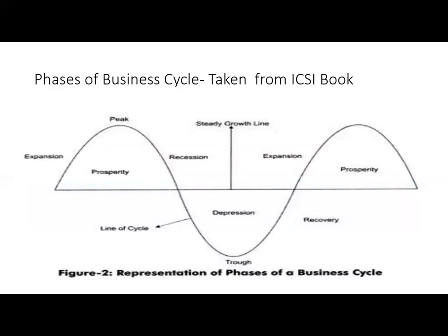The phases of the business cycle go somewhere up and somewhere down. This chart is taken from the ICSI book. When the economy is at the bottom, it is called a trough, and it is also a condition of depression or recession. From there, expansion starts, the economy reaches a peak, and then contraction and recession begin again.